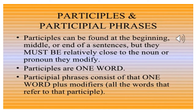Participles are forms of verbs that can be used in sentences to modify verbs, nouns, noun phrases, and verb phrases. Participles can take the position of an adverb or adjective. They can be placed at the beginning of the sentence, in the middle of the sentence, or at the end of the sentence.